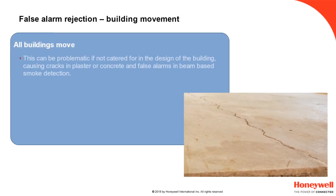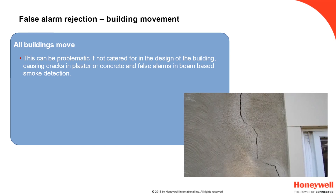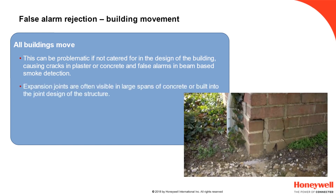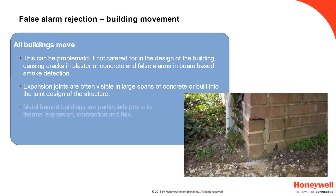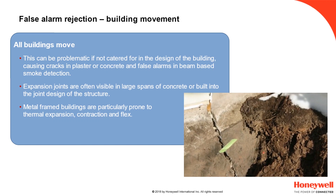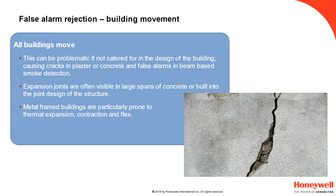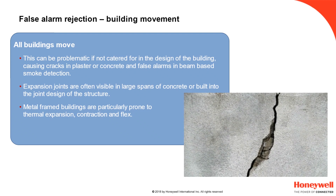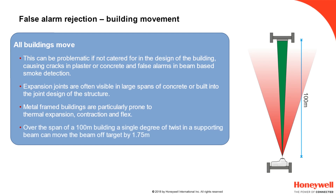Building movement is a major headache for traditional beam detectors. All buildings will be susceptible to movement, and most large buildings will include expansion joints to account for this movement without stressing the fabric of the building. Metal framed buildings, often used as the construction technique for factories and warehouses, are particularly prone to thermal expansion, contraction and twist. A small 1 degree twist in the roof beam to which the detector is mounted will move the centre point of the beam over 1.75 metres where it hits the reflector 100 metres away.